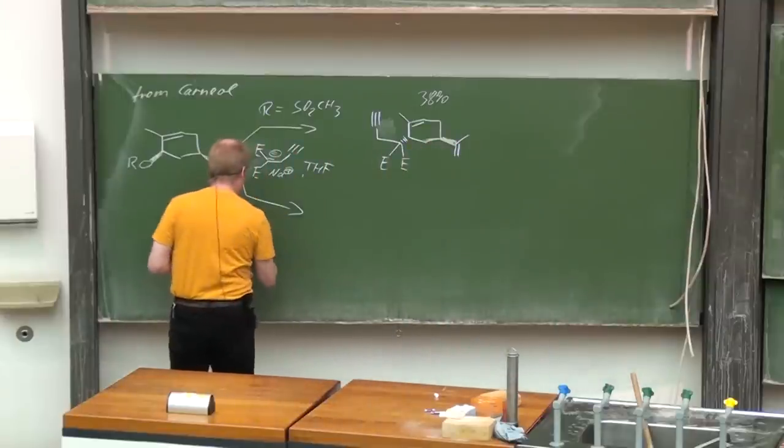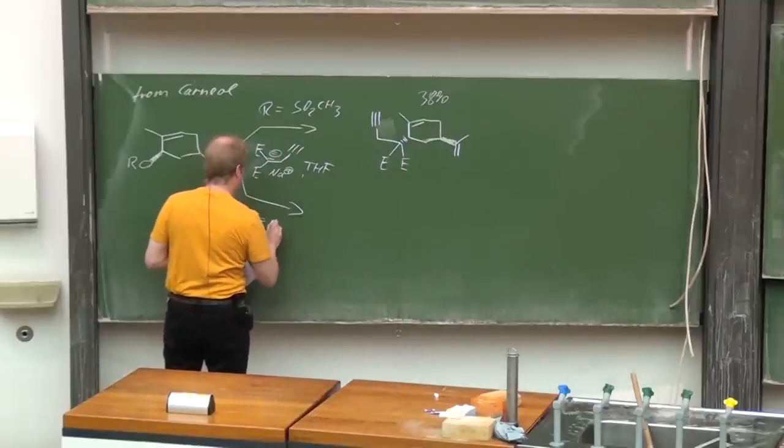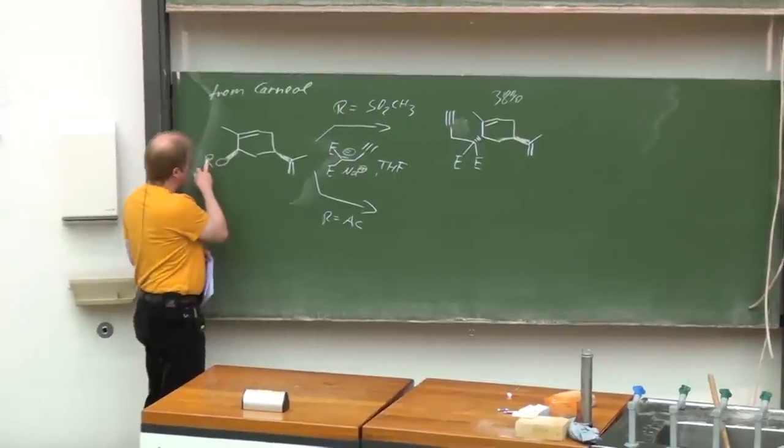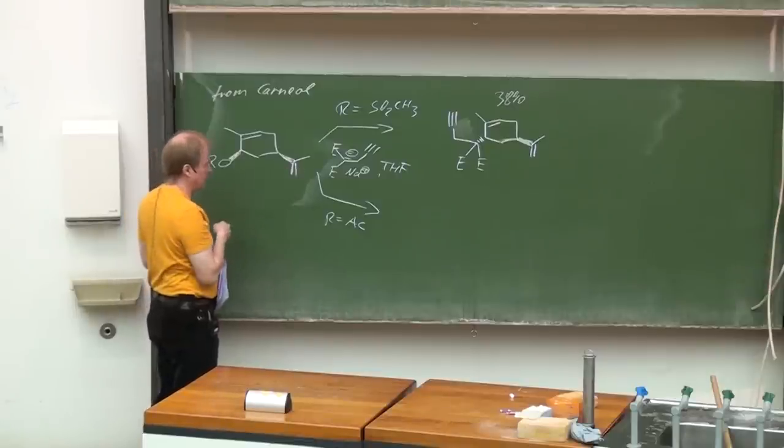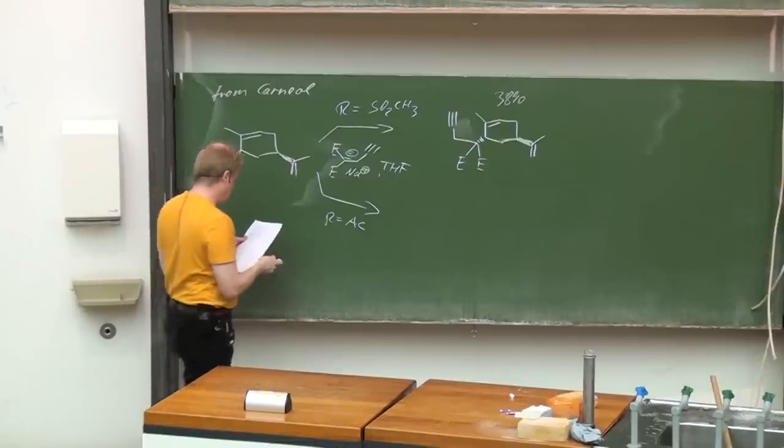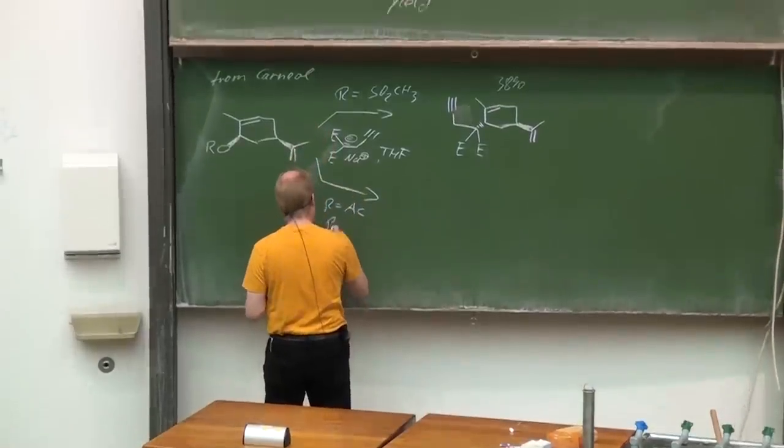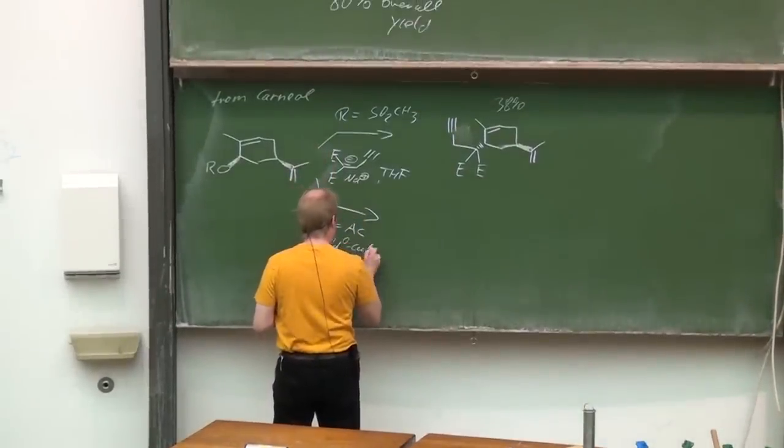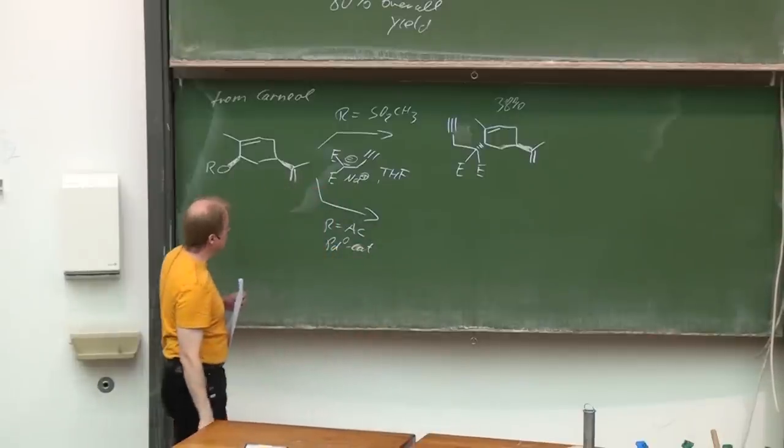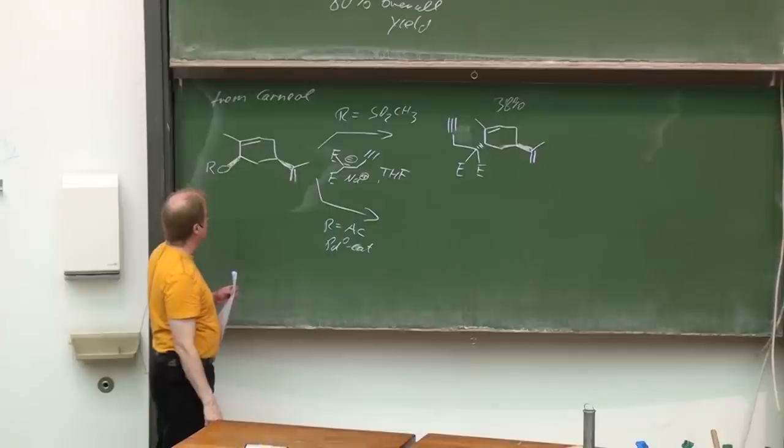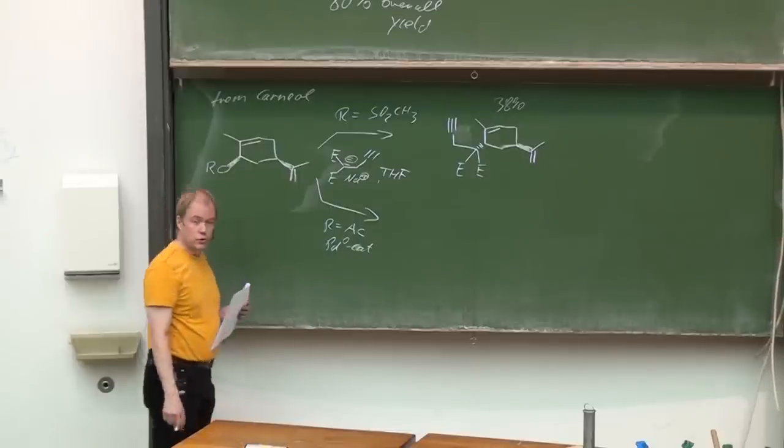But if you have an O-acetate here, then it wouldn't directly react with malonate—you need palladium catalysis. Then a palladium(0) catalyst. This is the reaction we discussed in the preceding lecture in part nine—it's the Tsuji-Trost reaction.